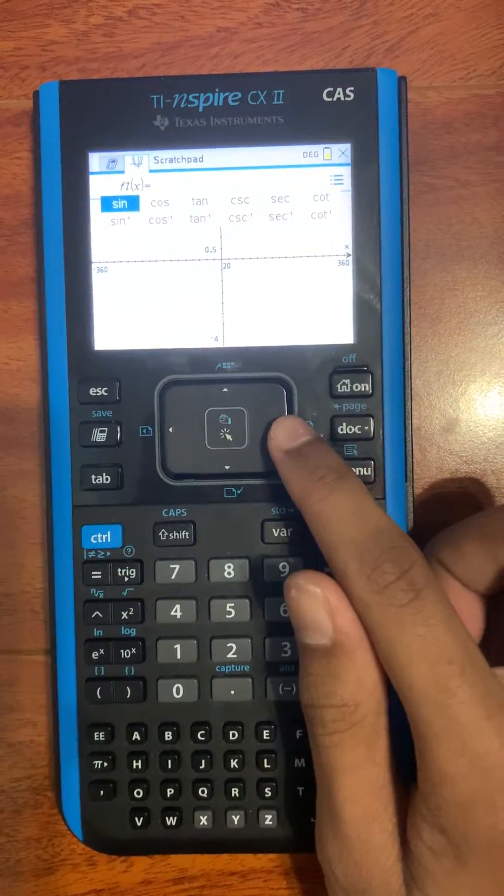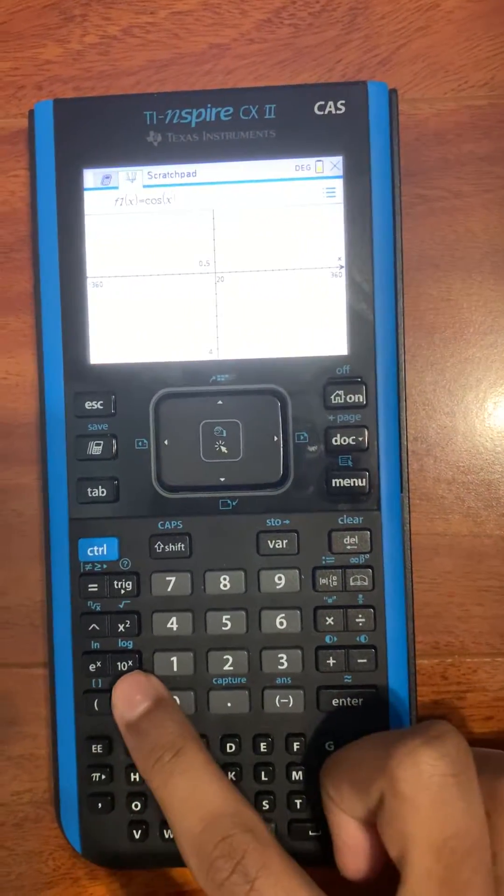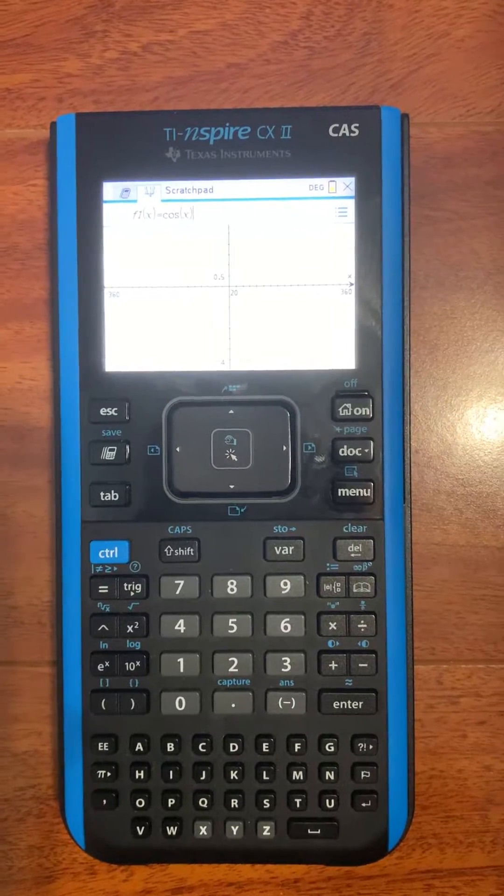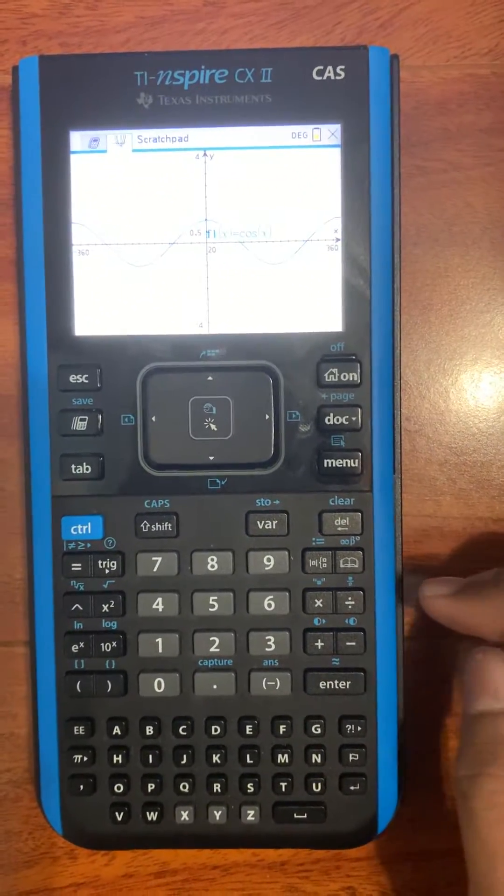Put in any function that you desire. I'll put cosine, and you can set it to any phase shift, amplitude, etc. that you want to. And here it'll have my graph.